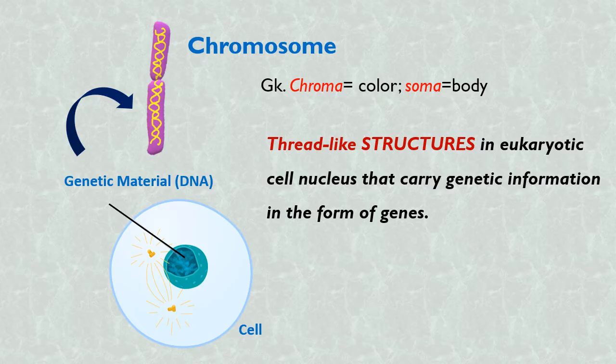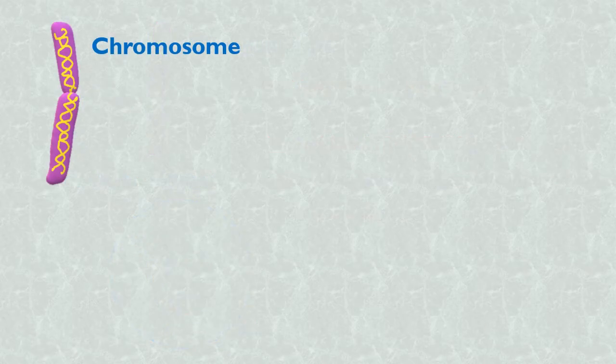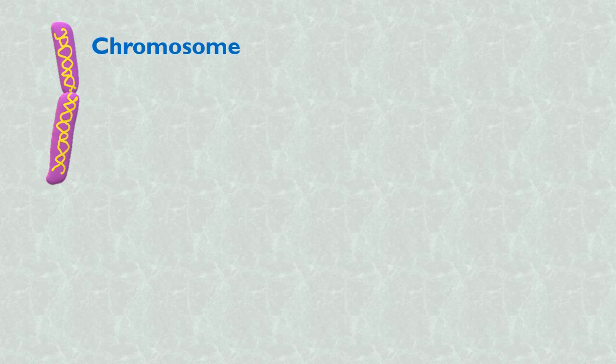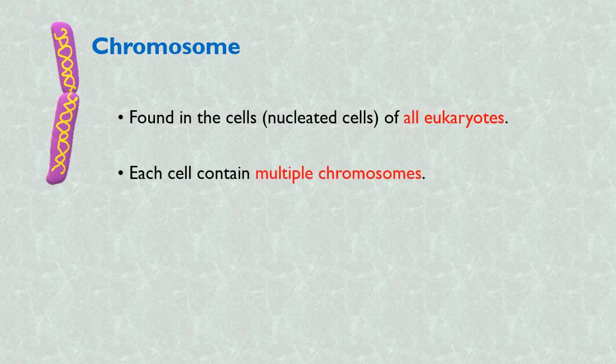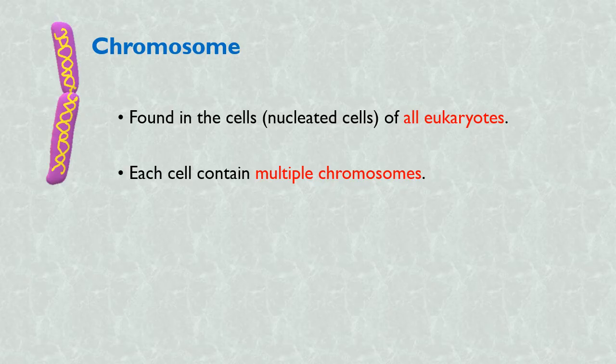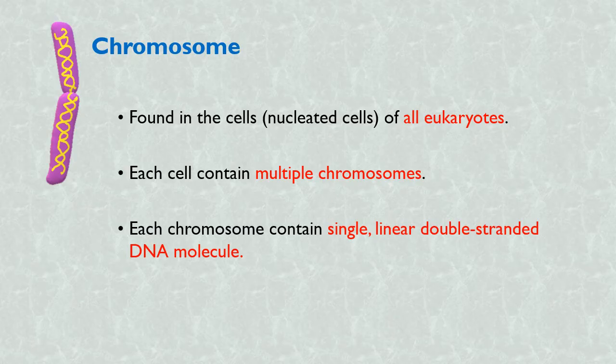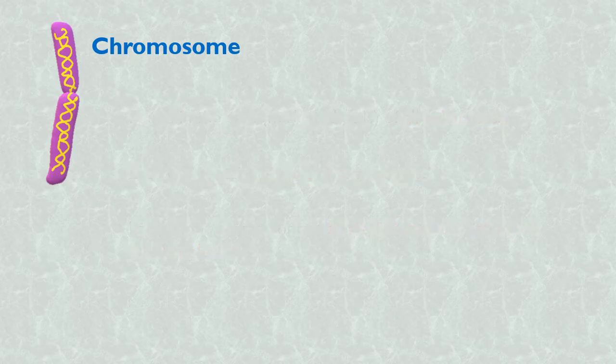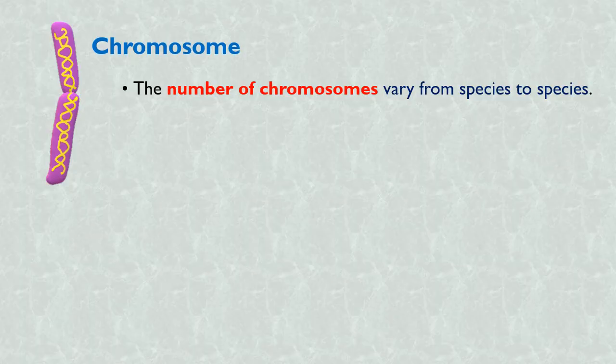Let's talk about some important points of chromosomes in eukaryotes. Chromosomes are found in the cells of all eukaryotes. Each cell contains multiple chromosomes. Each chromosome contains a single linear double-stranded DNA molecule.